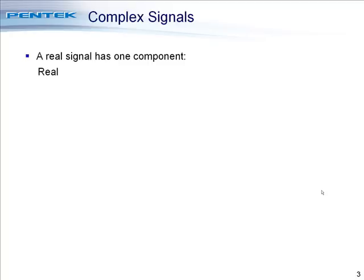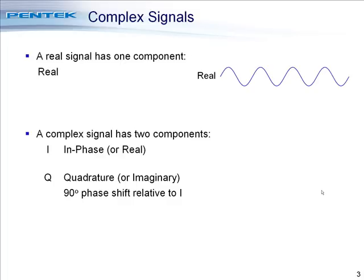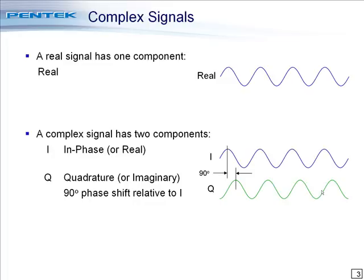A real signal has one component — a real component, like the real waveform we see here to the right. But a complex signal has two components: an I component, or in-phase, or real part, and a Q component, or quadrature, or imaginary part. The Q component has a 90 degree phase shift relative to the I part. Here we can see a representation of the two components of a complex signal shifted in phase by 90 degrees.